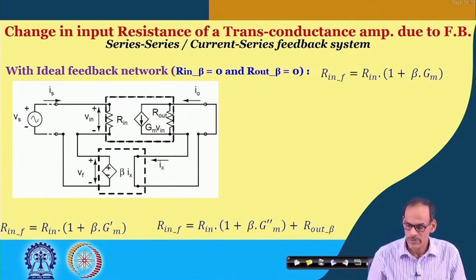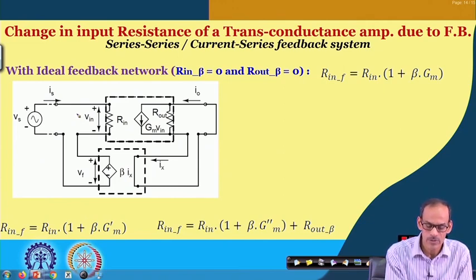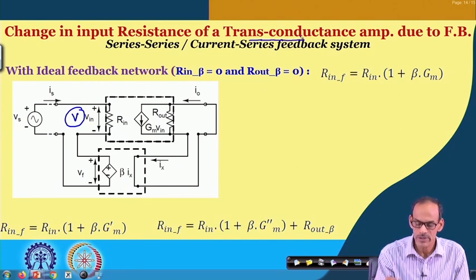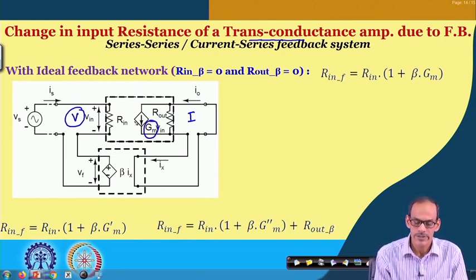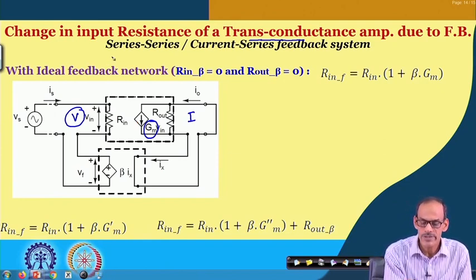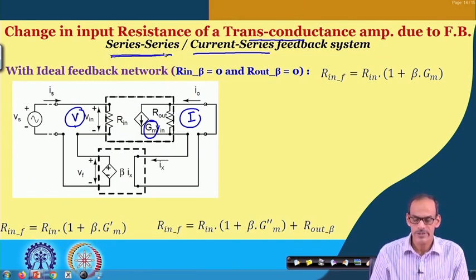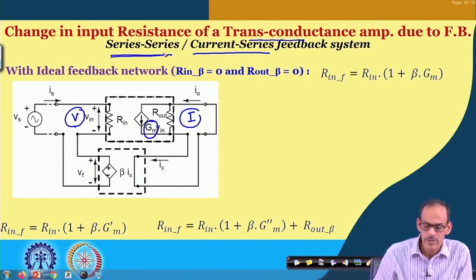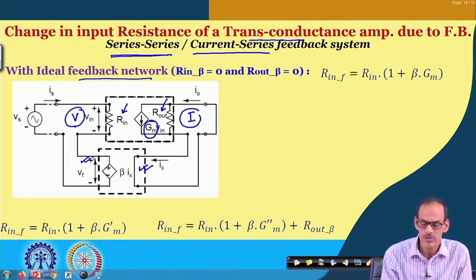Let us now consider the transconductance amplifier with series-series feedback — also called current-series feedback. Here the input is voltage and the output signal is current, so the amplifier gain is transconductance. The feedback system senses current at the output and mixes in series at the input. Again, to start with we consider practical values of R_in and R_out, but we keep the feedback network ideal: input resistance of the feedback network is 0 and output resistance is also 0.